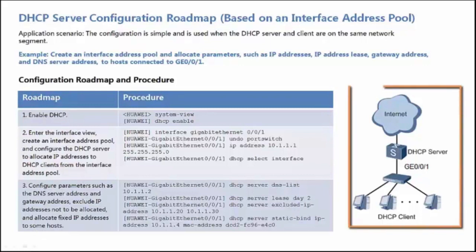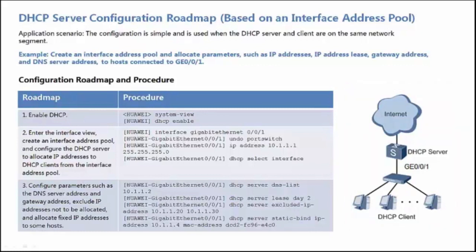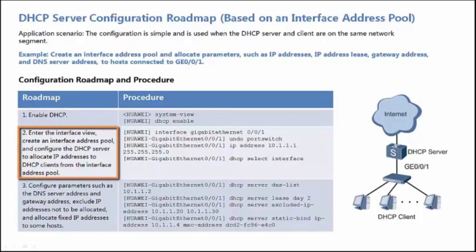As shown in the figure, no DHCP Relay Agent exists between the DHCP Server and DHCP Clients. The configuration roadmap includes three steps. Step 1: Enable DHCP and the DHCP Server.